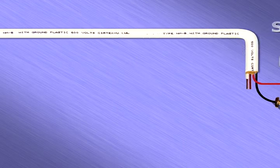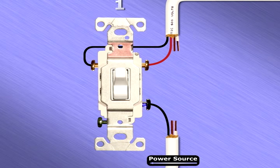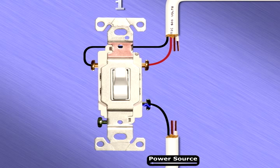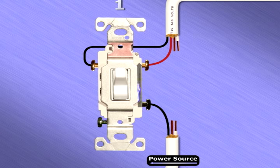The same will work if the electrical current arriving to switch number one's common screw finds that the switch is in the up position. The current will attempt to pass to the right traveler terminal screw and will try to continue along the red traveler wire.